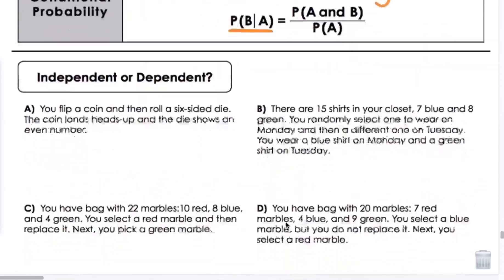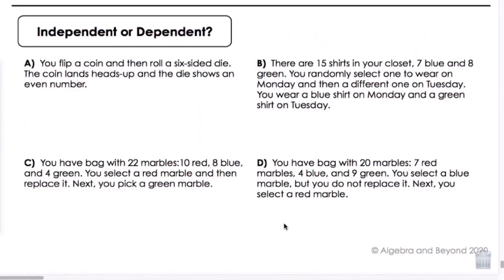In this first part, let's determine first if events are independent or dependent. You flip a coin and then roll a six-sided die. The coin lands heads up and the die shows an even number. Doing those two things, are they independent or dependent? They are independent of each other.